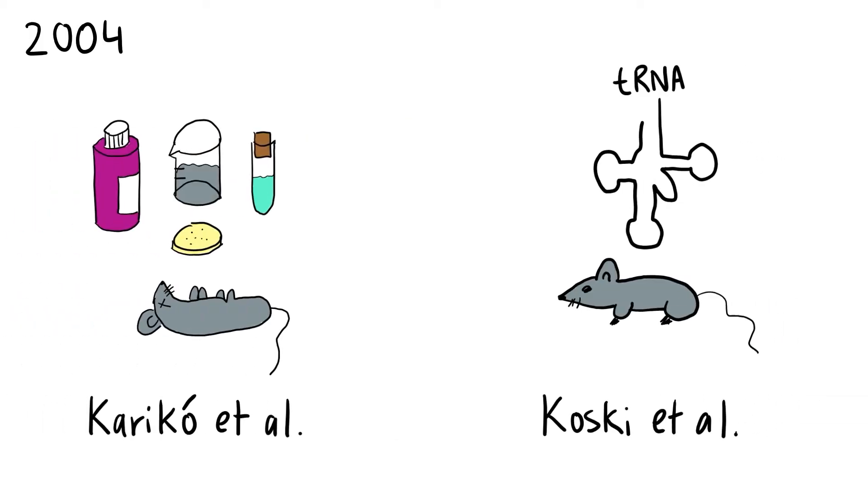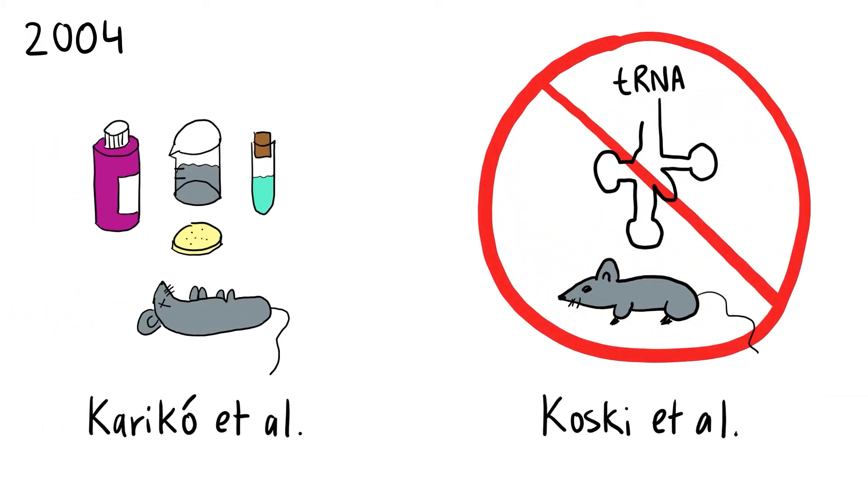In 2004, it was found that only certain forms of RNA stimulated human dendritic cells, which played a key role in immune response. Dendritic cells were also the subject of the 2011 Nobel Prize in Medicine, alongside the discovery of toll-like receptors, proteins in dendritic cells which play a key role in innate immunity.